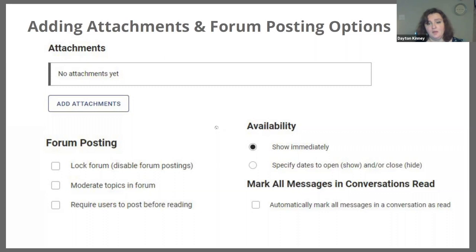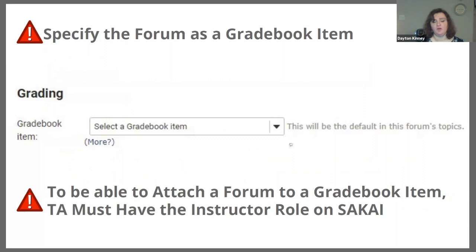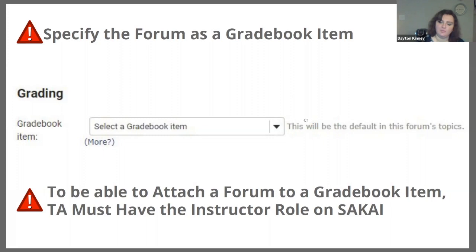We also have the option — if you want to schedule a forum to be released later — under the availability column, you're able to choose between showing immediately or choosing to be shown or hidden after a certain amount of time. Another handy feature when it comes to forums is specifying a gradebook item. This will allow you to grade using a checkmark, points, or a letter grade in the Sakai forum. In order to have this option, you have to have your gradebook filled out ahead of time to create those categories. Once you're able to connect your gradebook item with the forum, this forum will automatically include your gradebook and you're able to grade right in there, so students can receive credit.